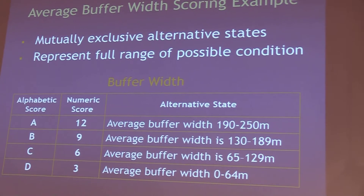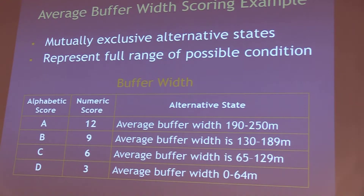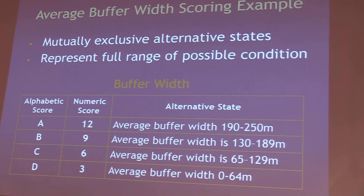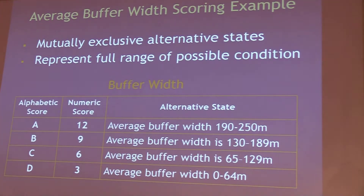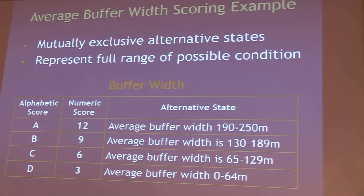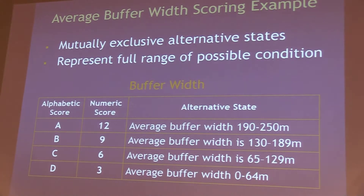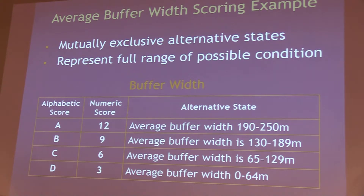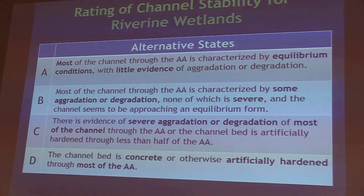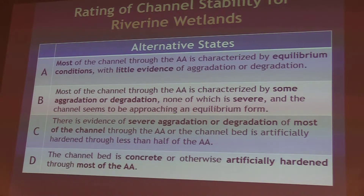CRAM scores using an alphabetic score — A, B, C, or D — because we all want to get an A. But CRAM needs a numeric score, so those alphabetic scores are translated into numeric scores via rating tables for each individual metric. Some metrics are very quantitative, like average buffer width, while others are more qualitative. For instance, in the riverine module there is a metric called channel stability where practitioners work through a worksheet assessing whether the channel is in equilibrium or showing signs of aggradation or degradation, with lower scores representing more severe degradation.